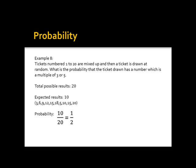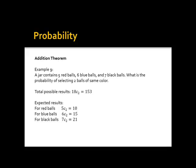Example 8. Tickets numbered 1 to 20 are mixed up and then a ticket is drawn at random. What is the probability that the ticket drawn has a number which is a multiple of 3 or 5? Since there are tickets numbered 1 to 20, the total possible results is 20. For the expected results, there are 10: which are 3, 6, 9, 12, 15, 18 for multiples of 3, and 5, 10, 15, and 20 for multiples of 5. So the probability is 10 over 20, which is also equal to 1 half.